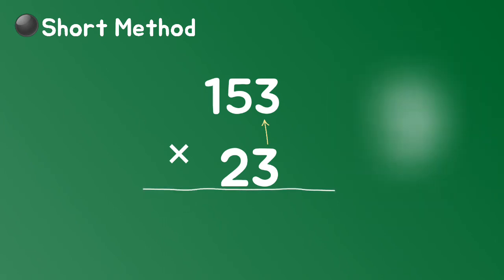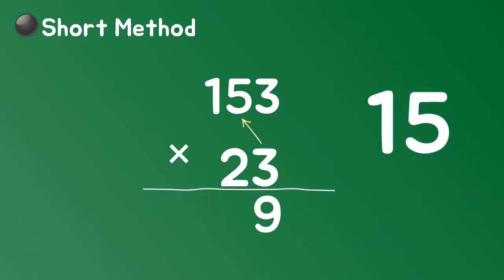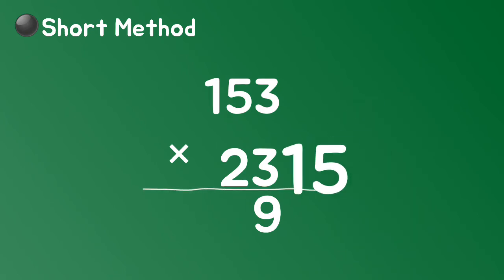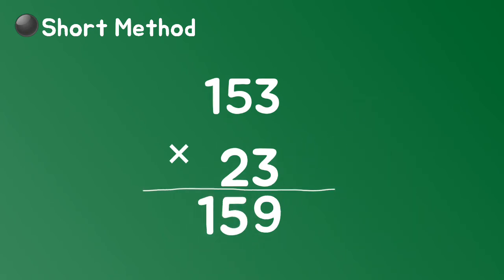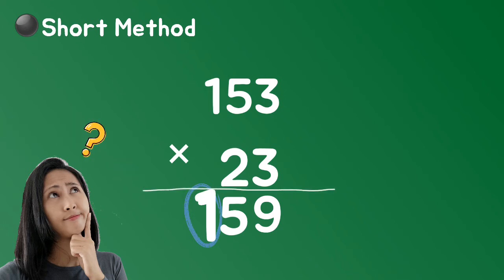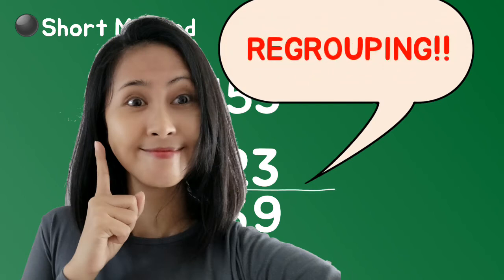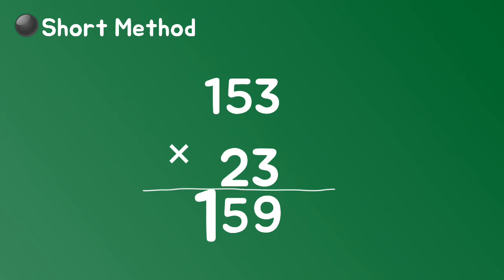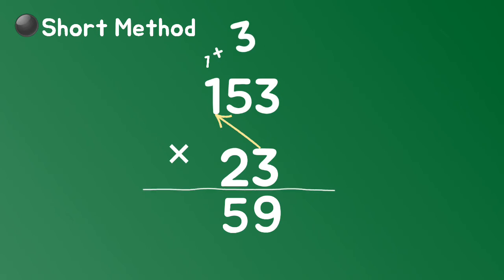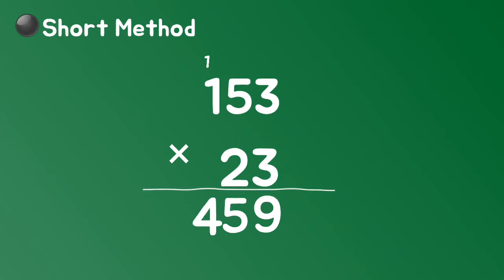3 times 3 is 9. 3 times 5 is 15. This time we have a two-digit answer. But we're going to need this space for 3 times 1. So — regrouping! Put 5 here and carry 1 to the next digit. Now continue: 3 times 1 is 3, plus 1 is 4. One's place — done.